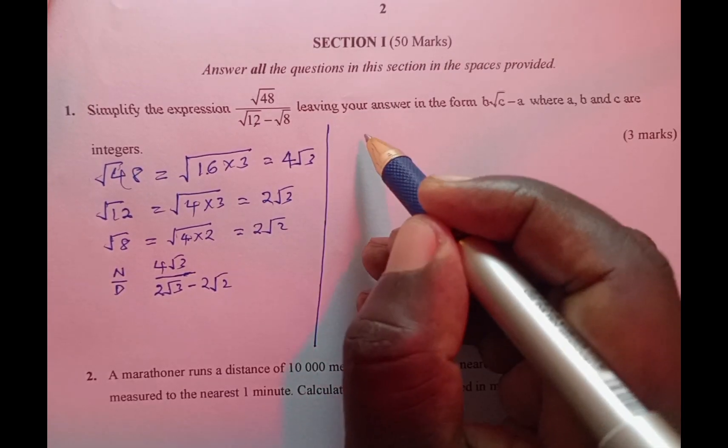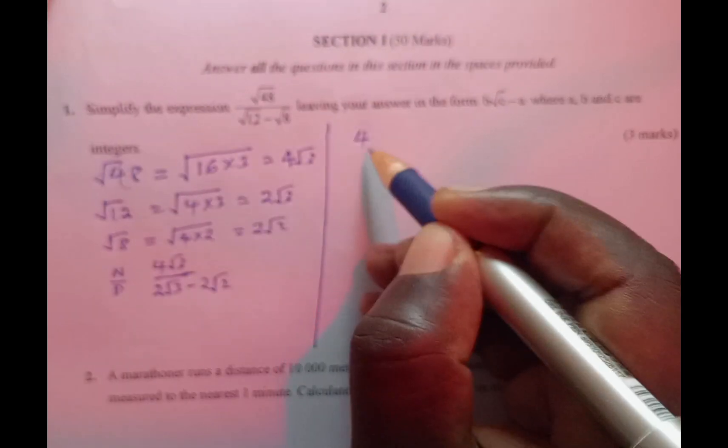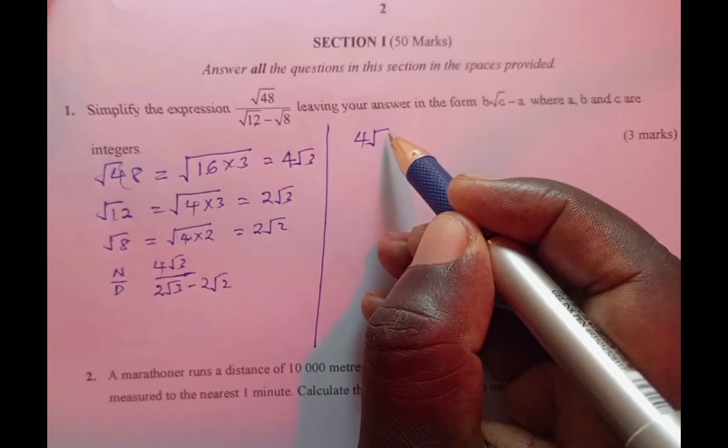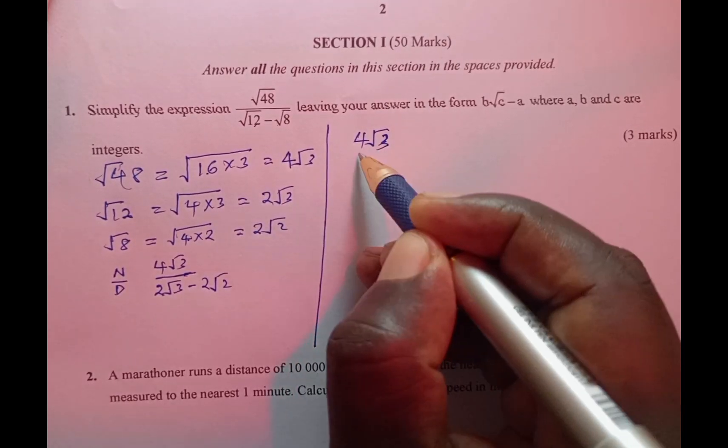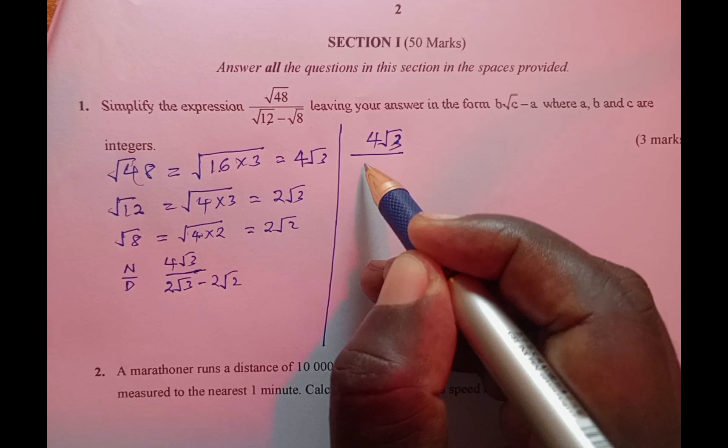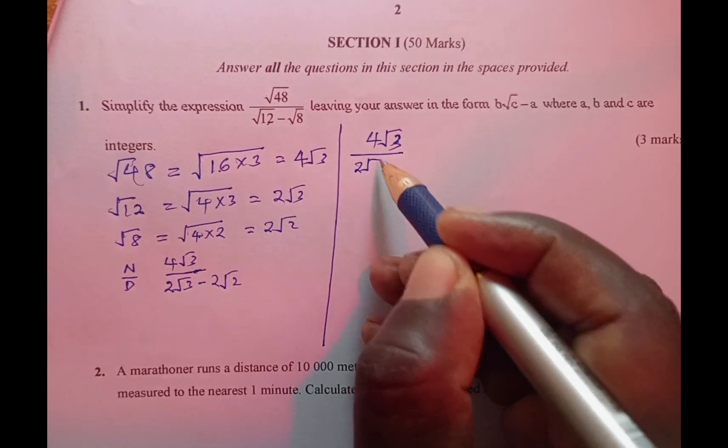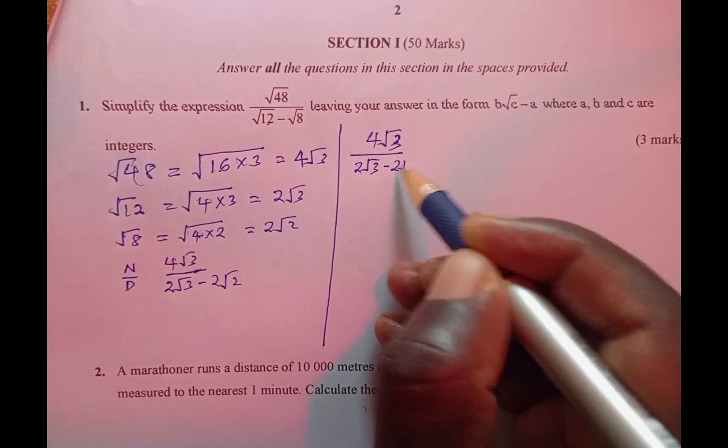After doing that, now we rationalize the denominator. We have 4√3 divided by 2√3 minus 2√2.